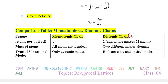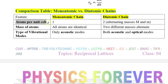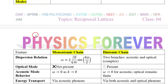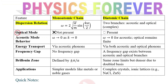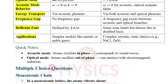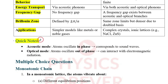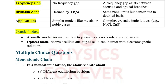A comparison table covers monoatomic vs. diatomic chains in terms of atoms per unit cell, mass of atoms, types of vibrational modes, dispersion relation, optical mode, acoustic mode, energy transport, frequency gap, Brillouin zone, and applications. Some key notes about acoustic and optical modes are also included.